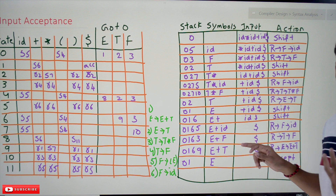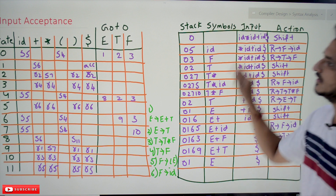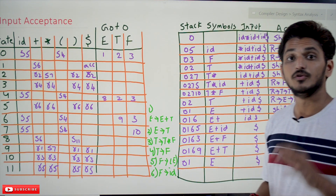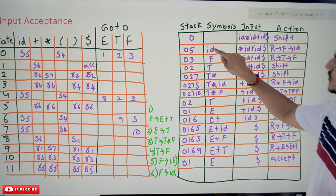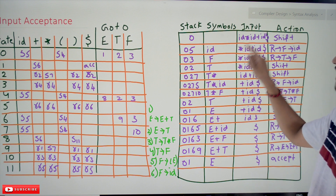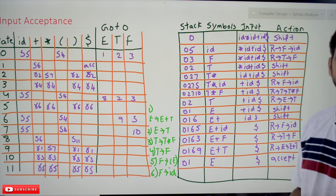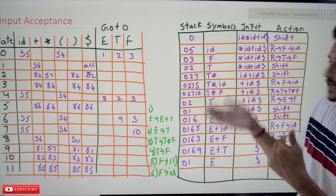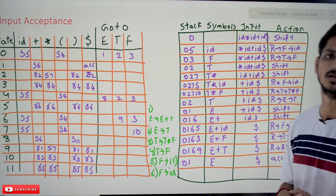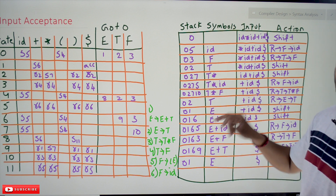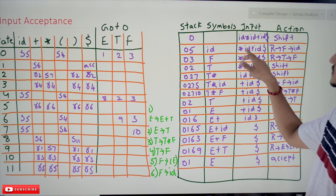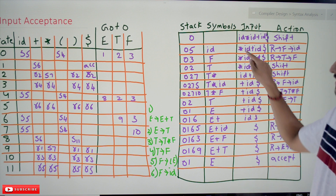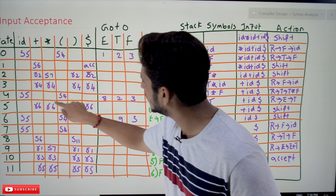The first action we take is shift. Why? Because state 0 on id says shift 5. Shift 5 means we move to the fifth state, so the value 5 is pushed onto the stack. The stack now contains [0, 5] and the remaining input is ★ id + id $.